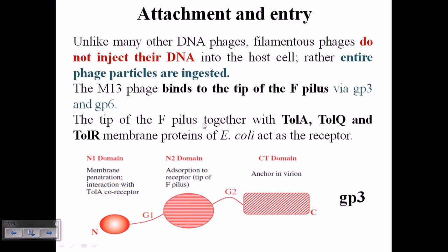Looking at gp3, we can see there are two or three different domains: n1, n2, and the CT domain. n1 is a domain present at the N-terminal, n2 is present in the middle, and the CT domain is the C-terminal domain present at the C-terminal region. The n1 domain is a membrane penetration domain which helps in interaction with the TolA core receptor present on the surface of the F-pili of the bacteria.